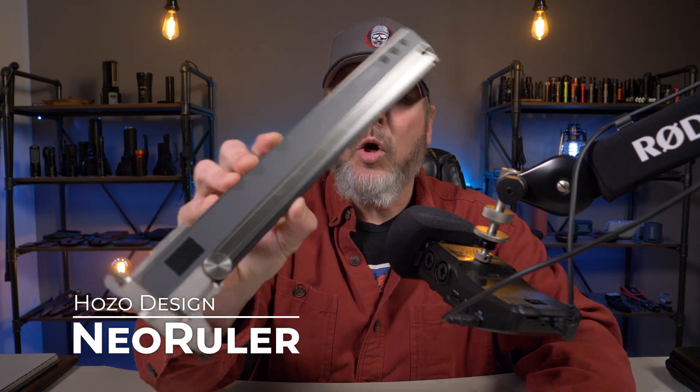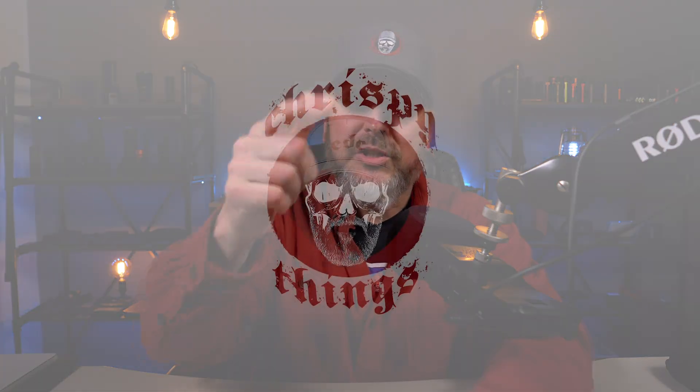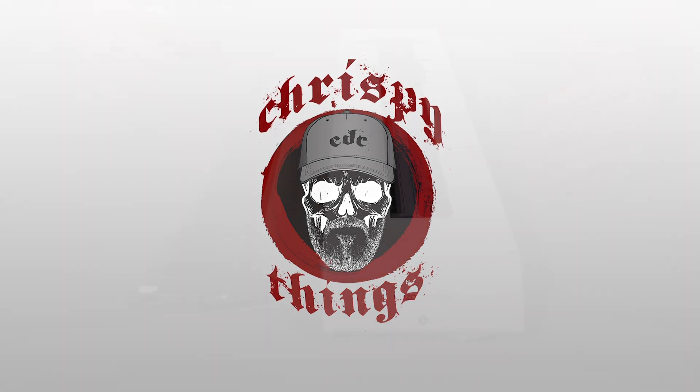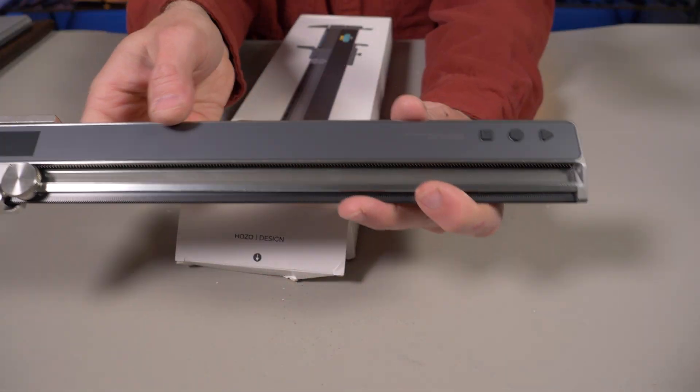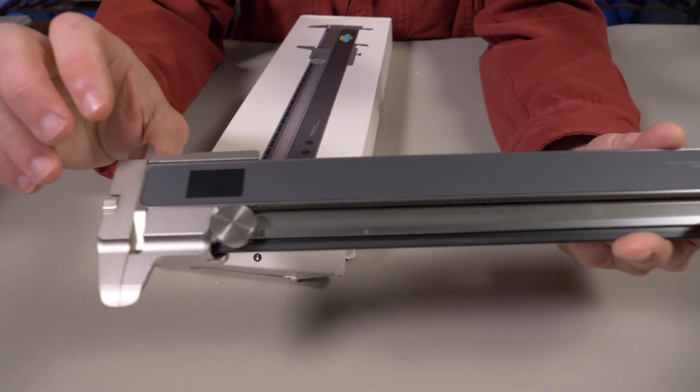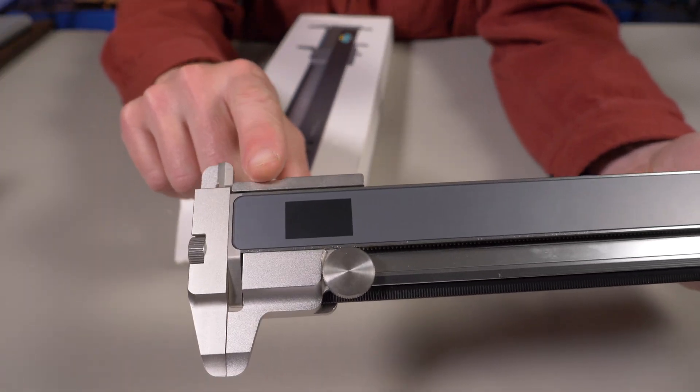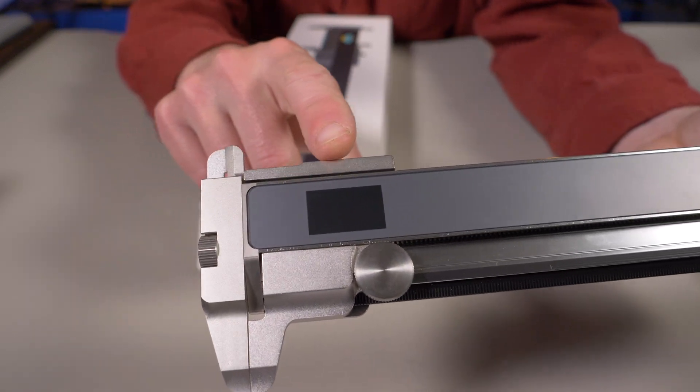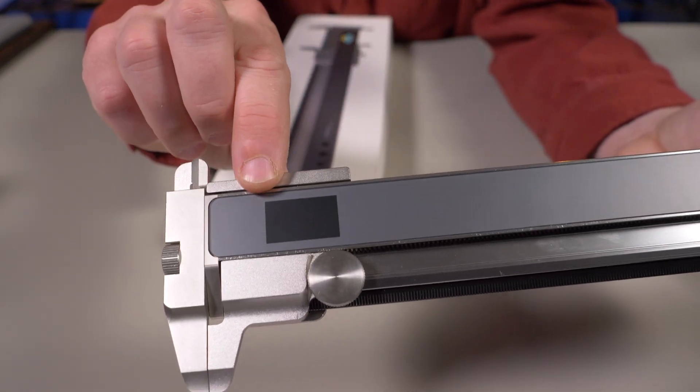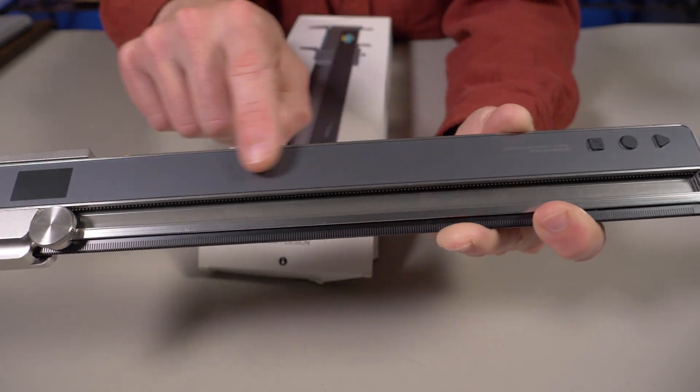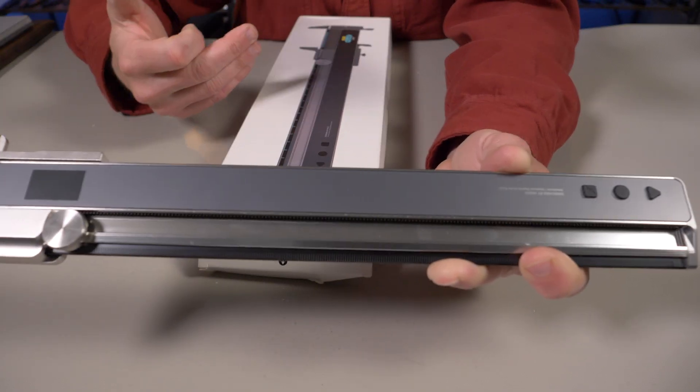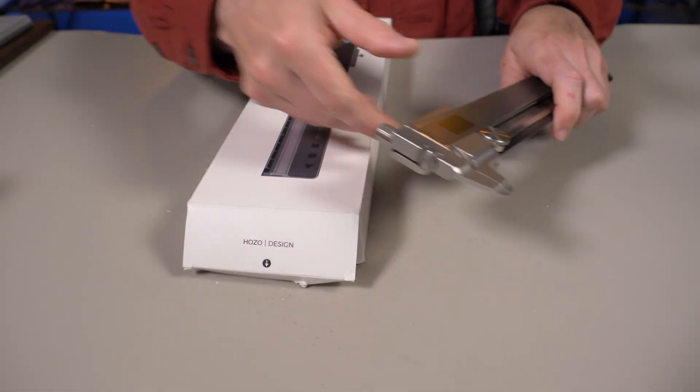So instead of individually responding, I decided to do this video. This caliper is called the neo ruler by hozo design. Let's check it out. The neo ruler here is basically a smart ruler. This is the base right here, and I've been using it with the caliper attachment. Yes, this is an add-on, and really this is the only way I'll be using the neo ruler is with this caliper attachment.